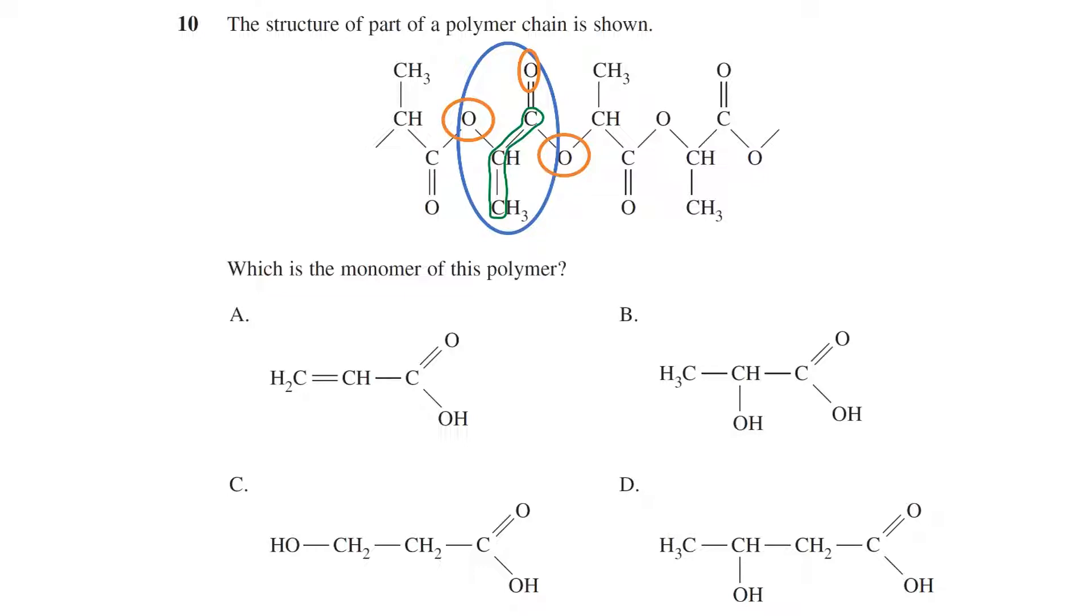In this case, these single bonded oxygens point to a condensation reaction via two OH groups joining together. We can go through the options to find the answer. Labeling the carbon with the carboxyl group as number 1, we can see that all options are the same so far, A through D.